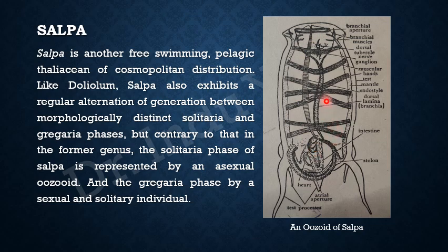On the dorsal side you can see more structures like dorsal tubercle, nerve ganglion, and the muscular bands. These muscular bands can vary in number — they can be fewer or more. It depends on the age of the animal and even the phase of the animal.